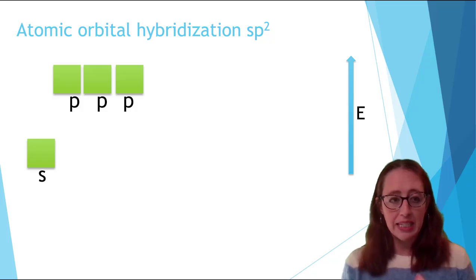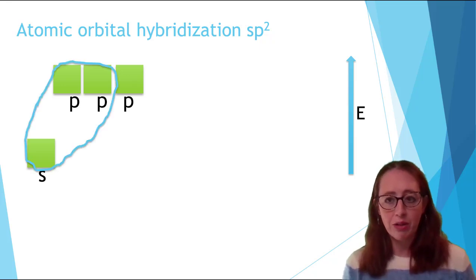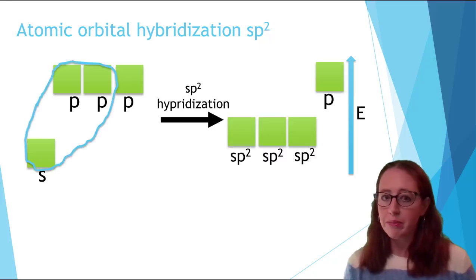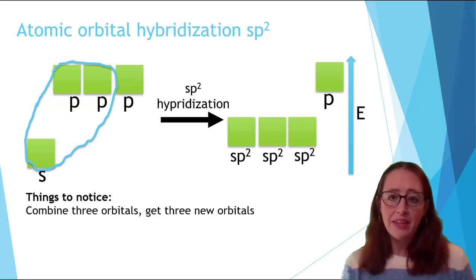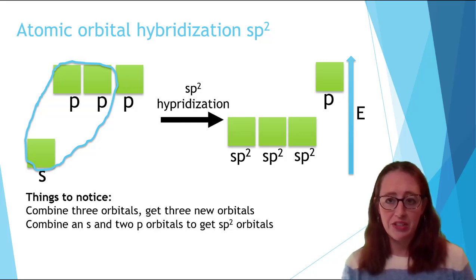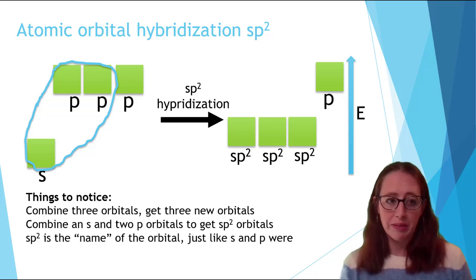We can do the same thing if we need three hybrid orbitals, except now we'll take an S and two valence P orbitals. This means we are combining three orbitals to form three new orbitals. And notice once again that these are in between the initial energy levels, and the leftover P orbital is still there.